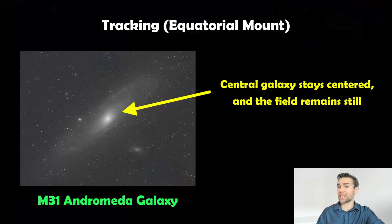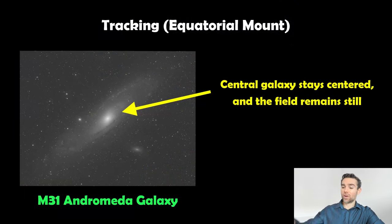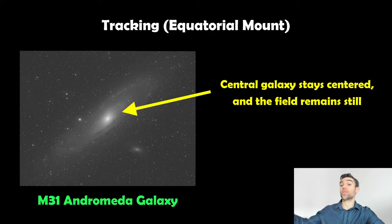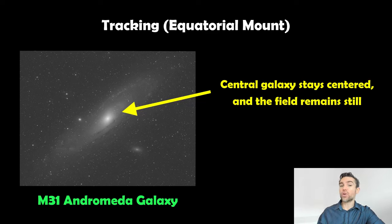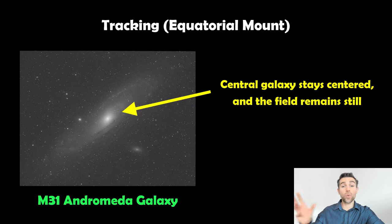So with the polar axis set up correctly, we only need to move in one axis to match the Earth's rotation rate. This means the object we're tracking is centred in our image for as long as we want — maybe an hour or a few minutes — and also the field doesn't rotate, because we're only moving in one axis. The field of view we're looking at remains still. So if you want to do astrophotography, you're going to want to get yourself an equatorial mount.